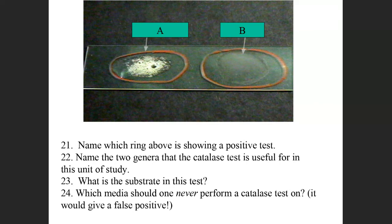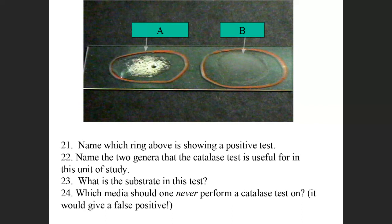True or false: the catalase test can be used to differentiate gram-negative bacteria? False — only gram-positive cocci. Everything else is going to be positive.